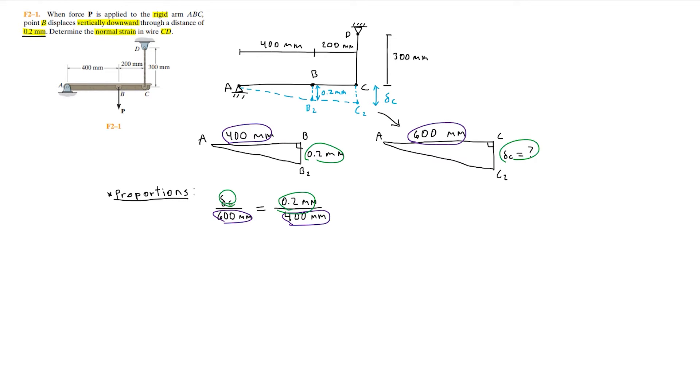We can see that we now have the proportional ratios which allow us to solve for delta C. Solving for delta C, we simply multiply the 600 to the right side. So delta C will be 0.2 divided by 400 times 600, which is 0.3 millimeters.